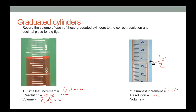Reading from the bottom of the meniscus, I'll say the volume is 201 milliliters. That means I need to have a digit in the ones decimal place — the units place.